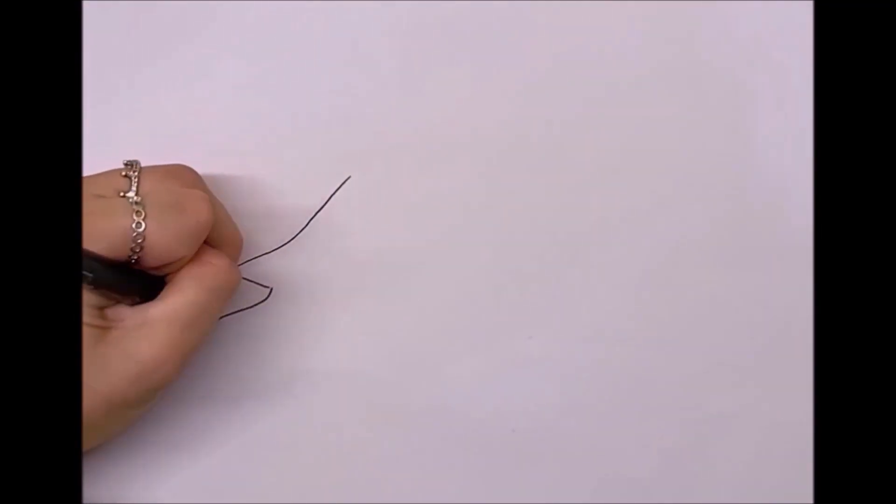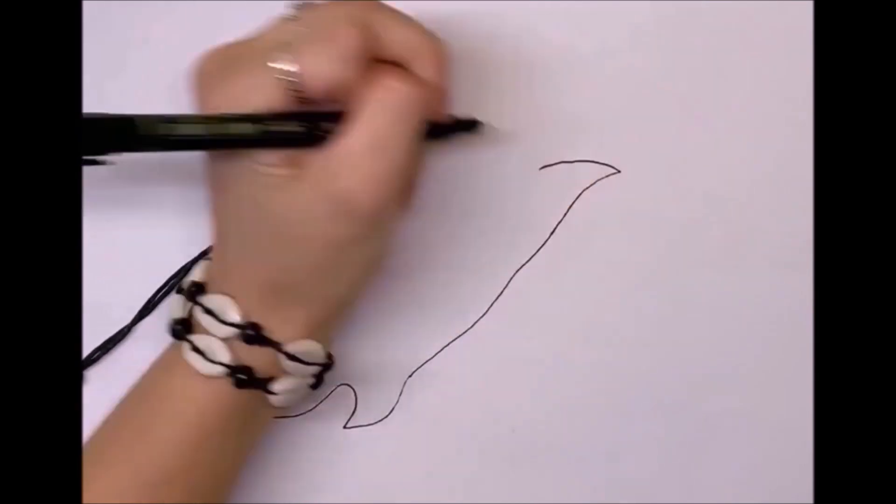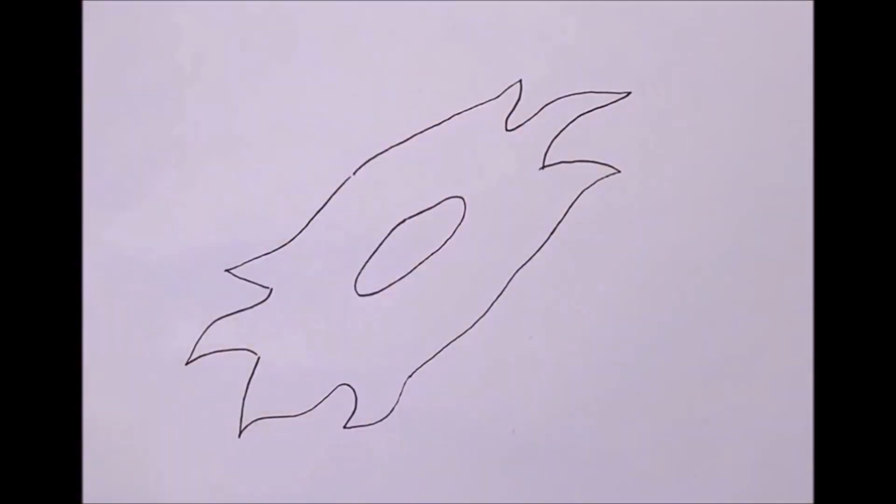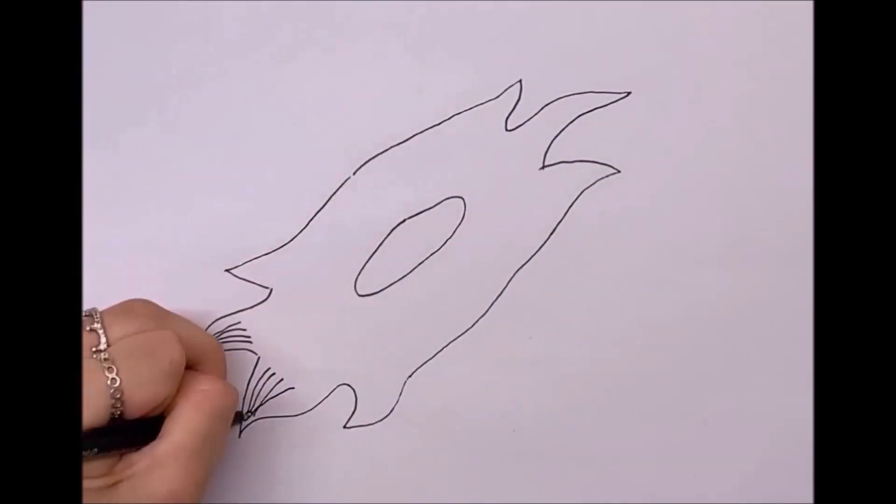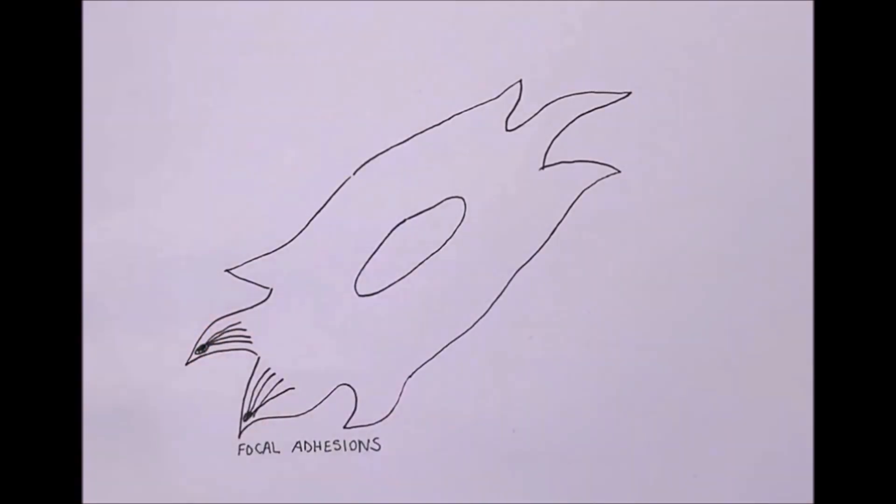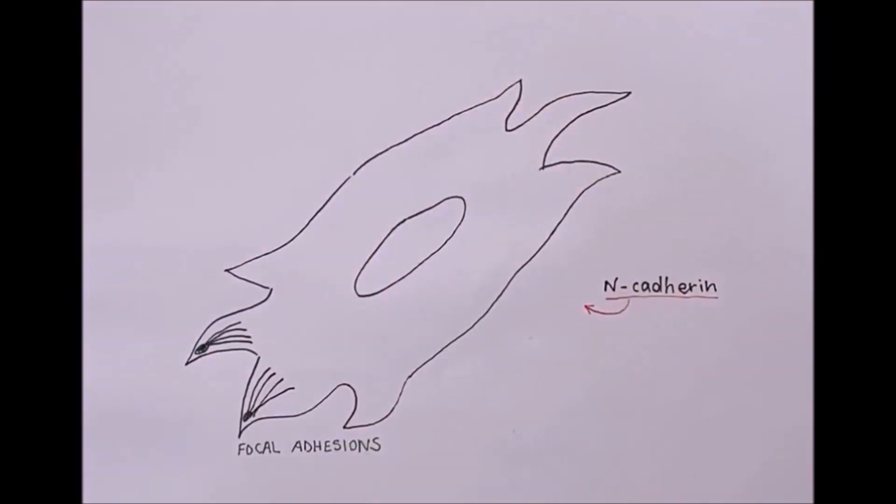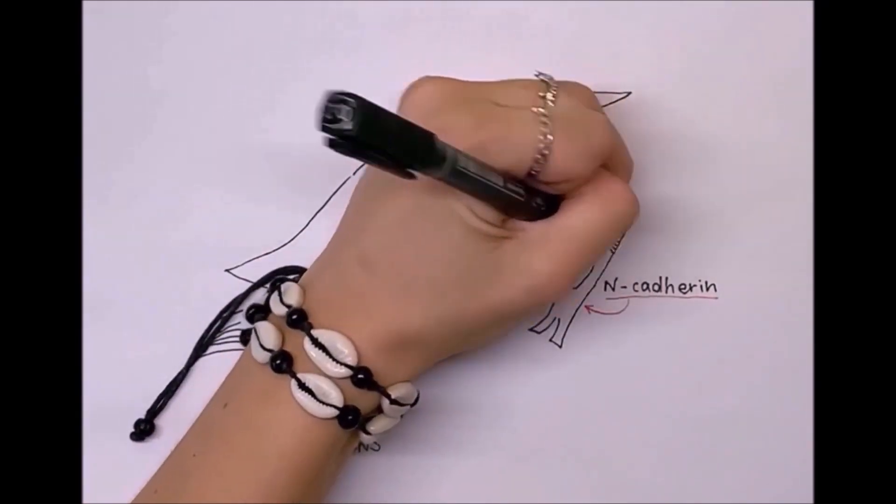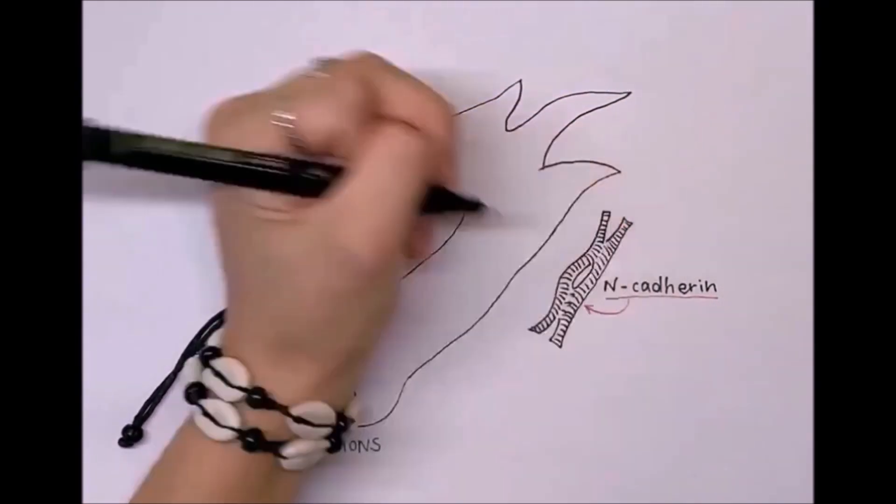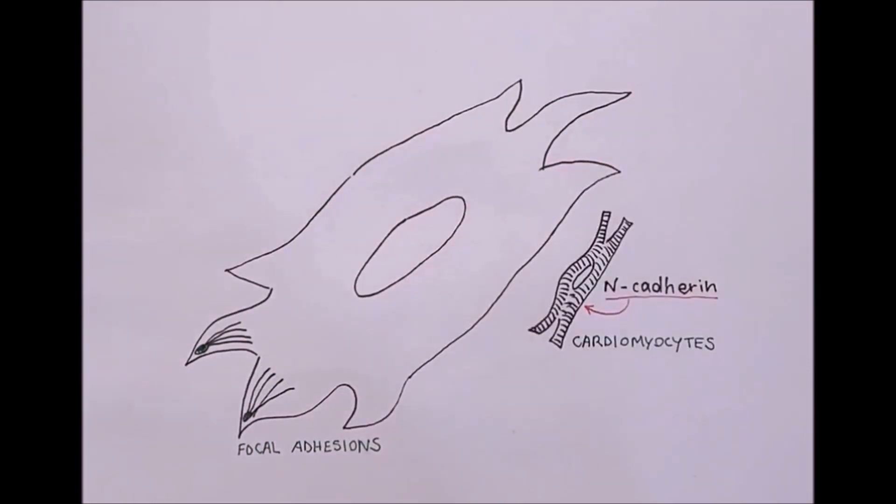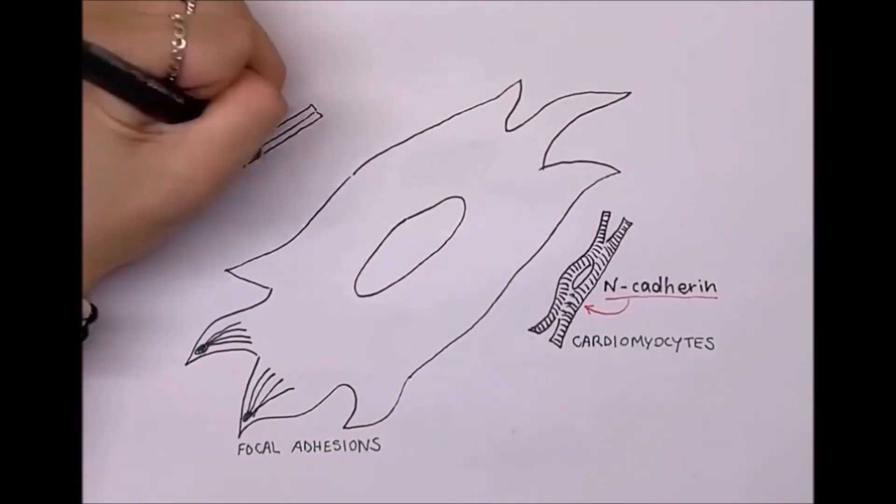On the other hand, a mesenchymal cell does not possess a functional polarity, and it is not equipped with cell junctions, but only focal adhesions, which are specializations needed for the cell to interact with the surroundings. It is usually spindle-shaped, and it differentiates during embryonic life into cardiomyocytes, fibroblasts, and other cell types.